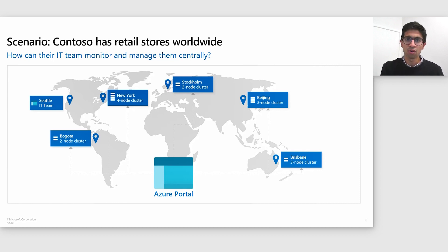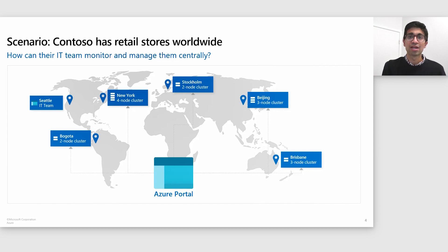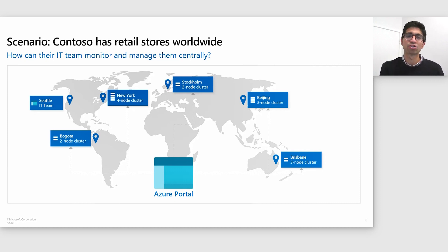One in New York, one in Bogota, Stockholm, Beijing, Brisbane, and many more. They have a centralized IT team that manages all of these clusters remotely, based here in Seattle, Washington. Because all of Contoso's infrastructure runs in Azure, their IT administrators are very well versed in using the Azure portal for all of their management, and are excited to continue to use the Azure portal for managing their clusters. So how can their IT team monitor and manage their on-prem infrastructure centrally?